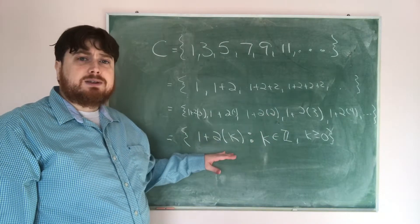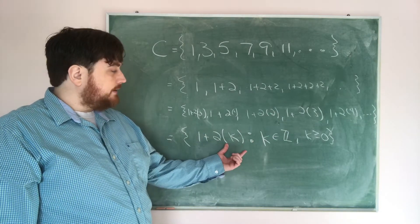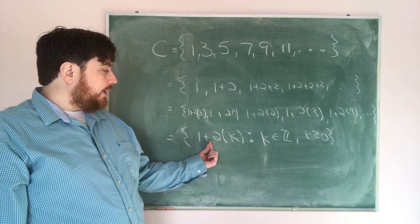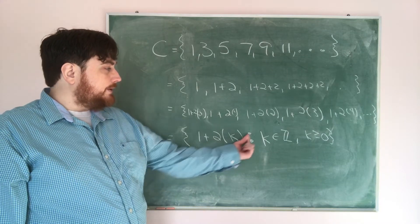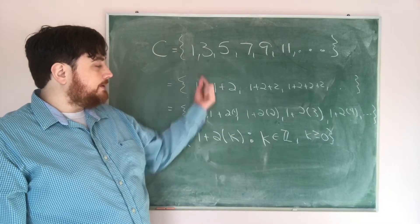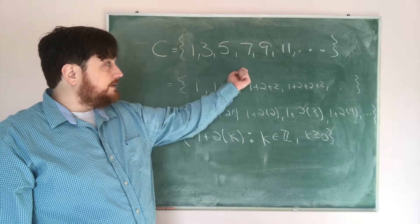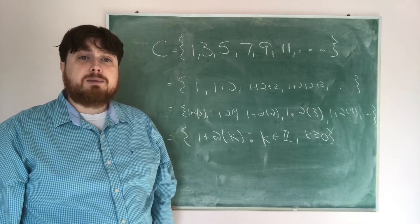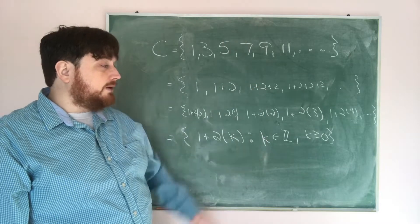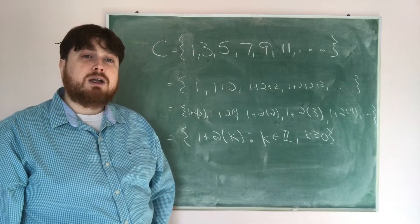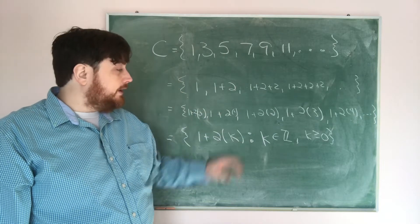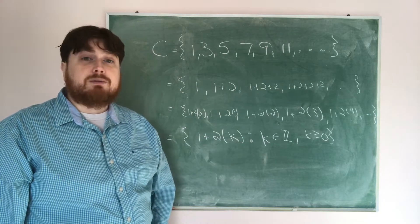As a last step, let's check this makes sense. If we start with 1 plus 2 times 0, that's 1. Then 1 plus 2 times 1 is 3, then 5, 7, 9, 11. So I am getting out the original listed set by following these rules. I've taken a set in listing notation and written it in terms of a rule.